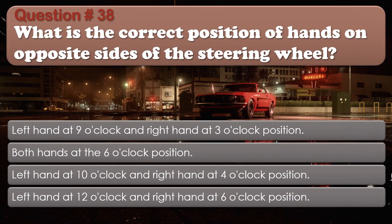Question number 38. What is the correct position of hands on opposite sides of the steering wheel? The correct answer is: Left hand at 9 o'clock and right hand at 3 o'clock position.